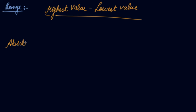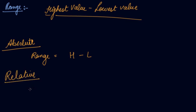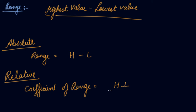The absolute measure of dispersion is range, which is highest value minus lowest value. Whereas the relative measure of dispersion is the coefficient of range, which is calculated by: highest value of the series minus lowest value of the series, divided by highest value plus lowest value. It is a very simple and easy method of calculating the measures of dispersion.